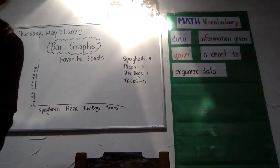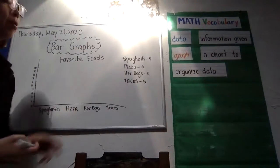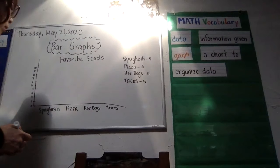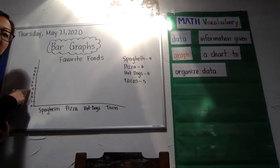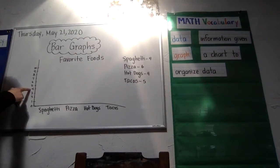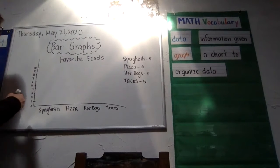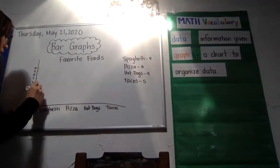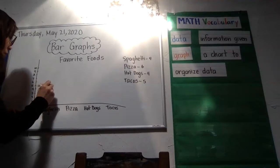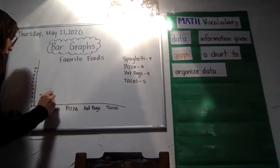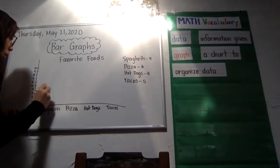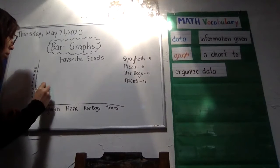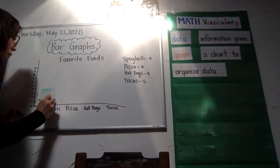Let's start with spaghetti. Four people voted for spaghetti. So we can see that here is where I see the four on my bar graph. I'm going to create a bar that goes up to the four and color it in — just coloring in a bar that goes to the number four.